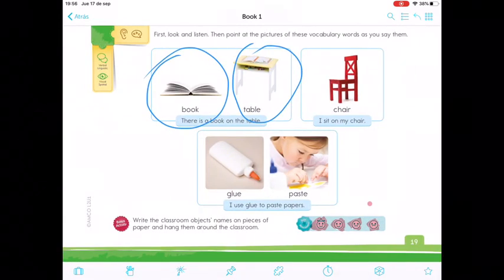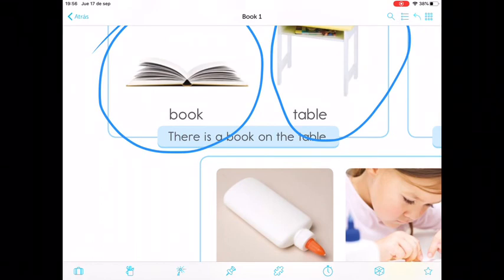Then, for final, ahora vas a escribir con la ayuda de tu mom, your mother, your father. Van a escribir las palabras y lo vas a pegar en el objeto. Por ejemplo, van a escribir la palabra book y lo pegan en un book. Table y en una mesa.